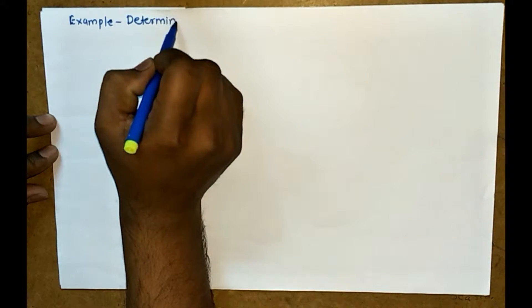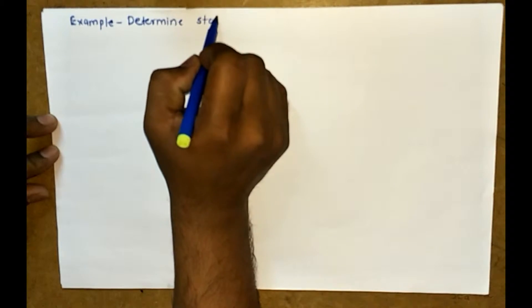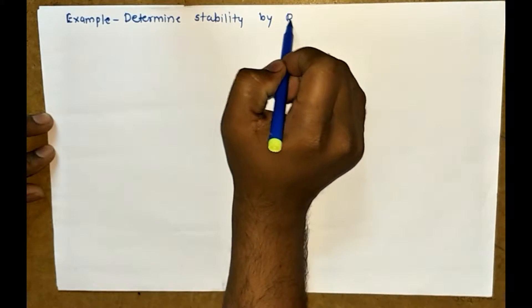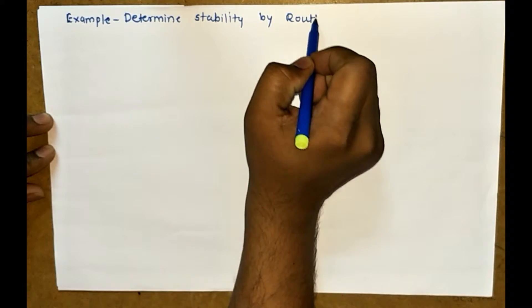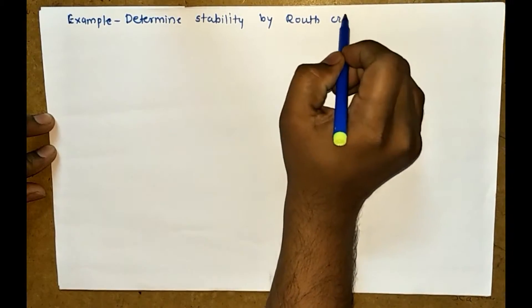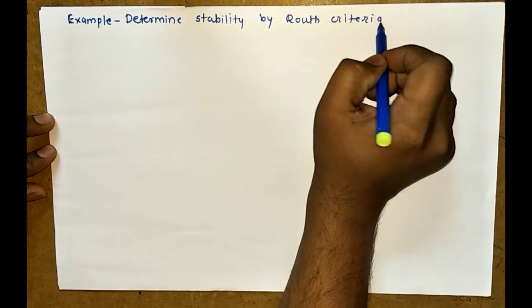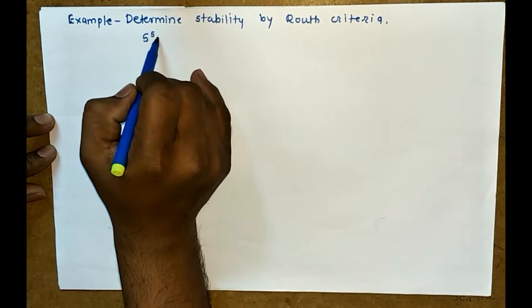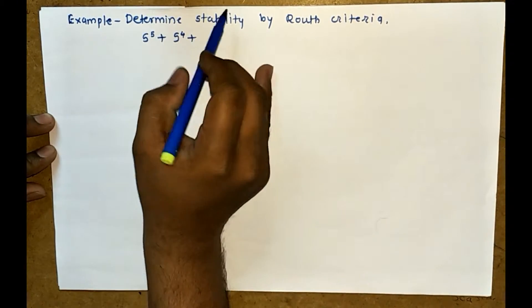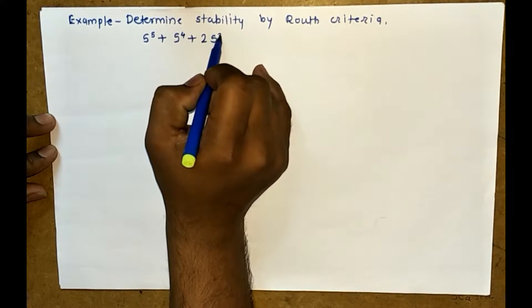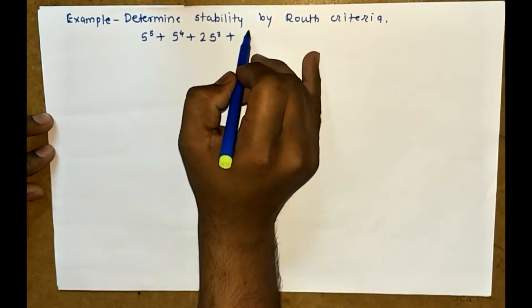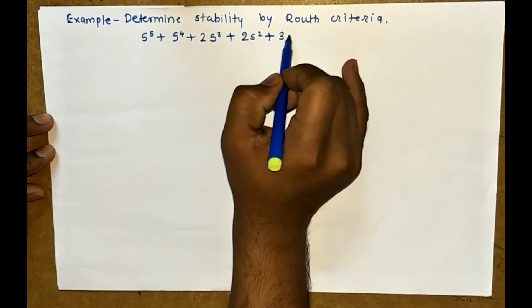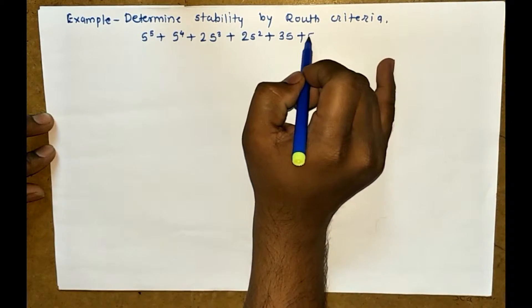Determine stability by Routh criteria. The given characteristic equation is s^5 + s^4 + 2s^3 + 2s^2 + 3s + 5 = 0.